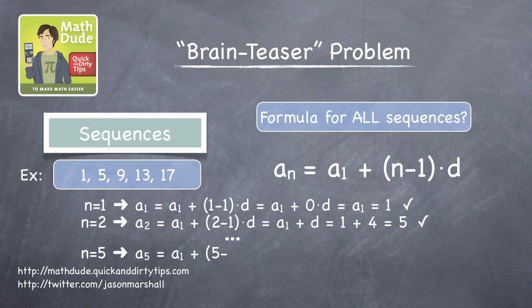Let's skip to n equals 5. a sub 5 equals a sub 1 plus 4 times d, which is just 1 plus 16. That equals 17. So, it always works.